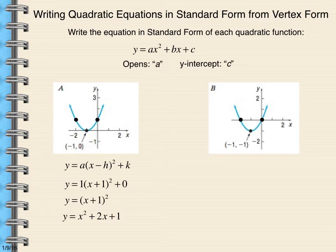Now in example b, I can see that the curve opens up, and a is 1. The vertex is negative 1, negative 1. I can substitute in place of h and k. So my equation looks like this. What I can do is square out the binomial and combine my constant terms. So here is my equation in standard form.